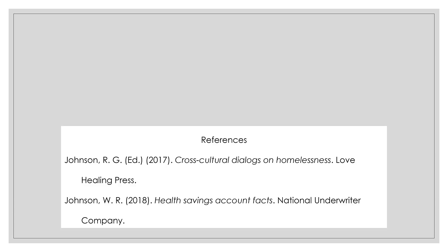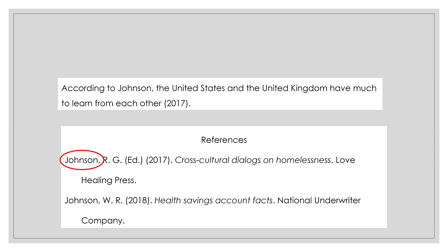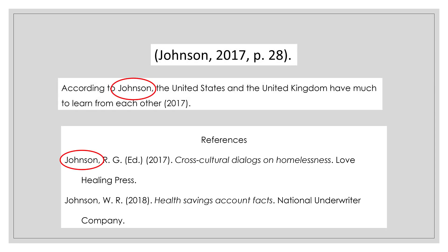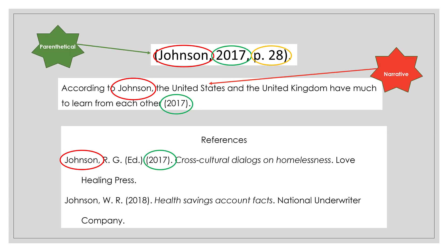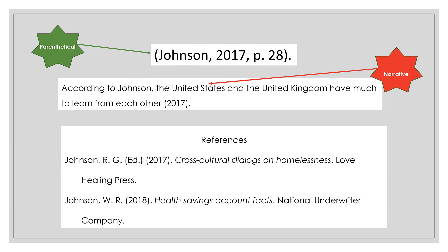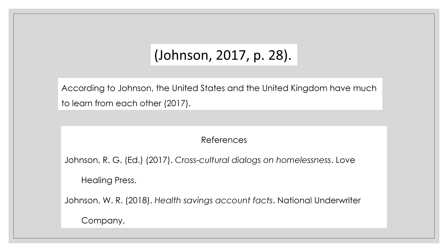The basic concept of in-text citations is pretty simple. You use the first element of the full reference citation, comma, and the date, comma, and possibly the location. These elements can be in the text or in parentheses. So why do you need to watch this video? Because, like so many things, there are exceptions. We're now going to explore these exceptions so you have an idea of how they work.